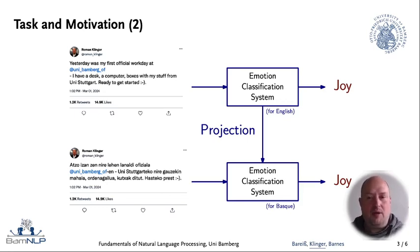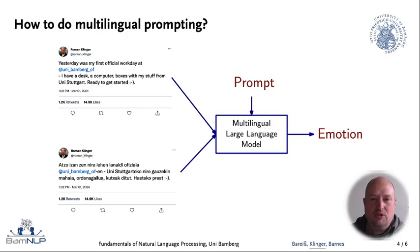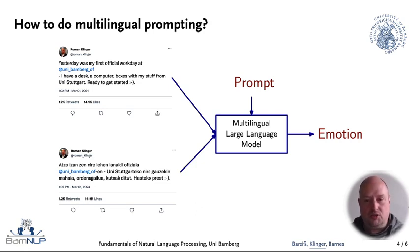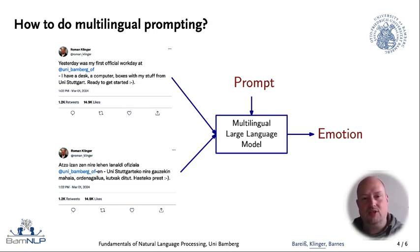For example, by projecting the machine-learned model from one language to another. Now, with large language models that can be configured for a specific task with a prompt, the setup could be different. We could use a multilingual large language model that can deal with multiple languages automatically, and then instruct this model with a specific prompt to input the text, expecting it to handle input texts from different languages.